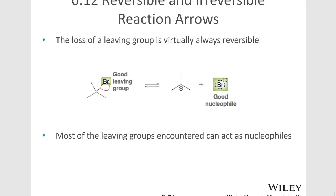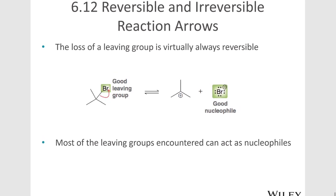Usually good leaving groups are going to be reversible because if it's a good leaving group, then it can also act as a good nucleophile. And this isn't always true, but for this reaction on the top, it is reversible.